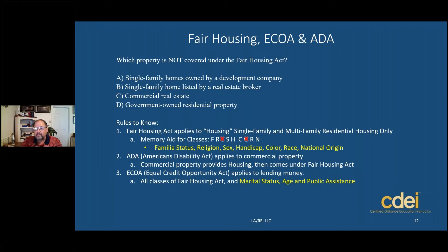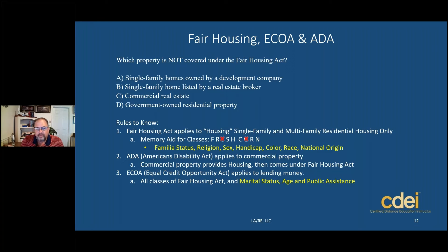Make note of that because you could get a question on the state exam that says which of the following involves discrimination under ECOA, and they may list different types of discriminatory classes — then they'll include marital status, age, or public assistance in there, which will define the correct answer. ECOA uses the Fair Housing classes — the Fresh Corn — plus the additional three: marital status, age, and public assistance.